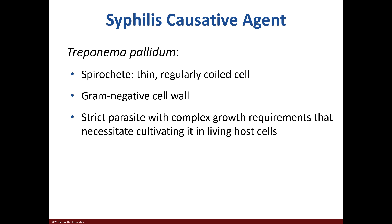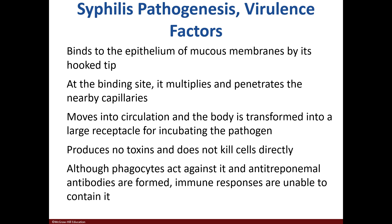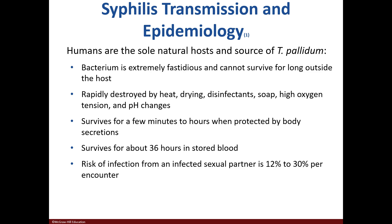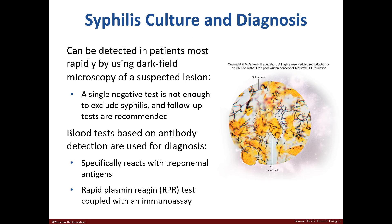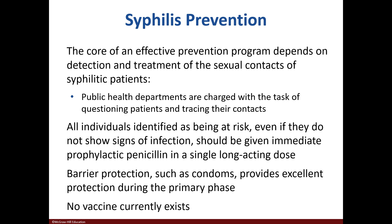The causative agent of syphilis is the bacterium Treponema pallidum. T. pallidum can bind with a hook tip, replicate, and penetrate capillaries, allowing it to move into circulation. Humans are the host of syphilis; it is destroyed easily but can be protected for hours by body secretions. Its mode of transmission is sexual contact. Syphilis has been around for centuries and the rates have been increasing worldwide. Blood tests and microscopy can be used in diagnosis. Prevention includes detection and treatment of contacts as well as protection.